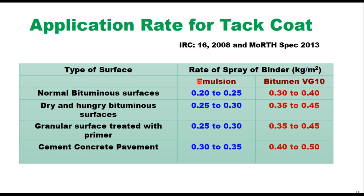The application rate for tack coat — using either emulsion or VG10 bitumen — is provided by IRC 16 and MORTH specifications. For a normal bitumen surface, the rate of spray is 0.2 to 0.25 kg per square meter for emulsion, and 0.3 to 0.4 kg per square meter for VG10. For dry and hungry bitumen surfaces, and for surfaces treated with primer, it is 0.25 to 0.3 kg per square meter for emulsion, and 0.35 to 0.45 kg per square meter for bitumen. For cement concrete pavement it is 0.3 to 0.35 for emulsion and 0.4 to 0.5 kg for VG10 bitumen.